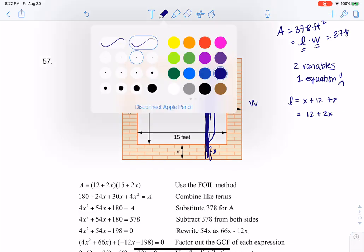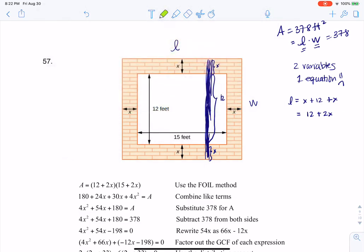And on the flip of that, if I take a look at the width, I know this distance here is x. This distance here is 15. And this distance here is x. So if I take a look at the width, it's x plus 15 plus x, which is like saying 15 plus 2x.